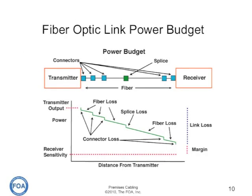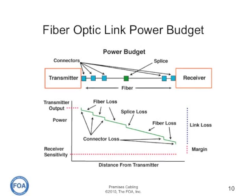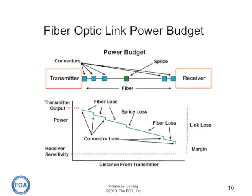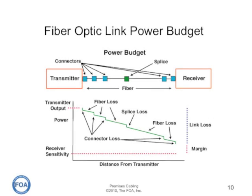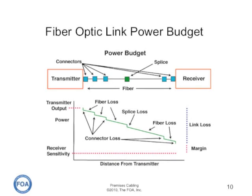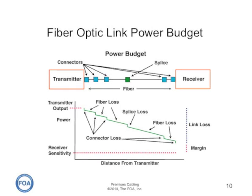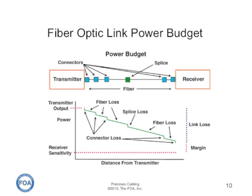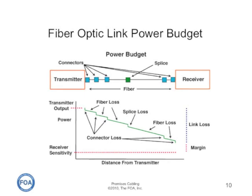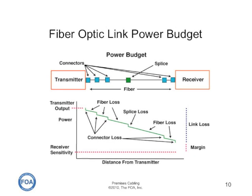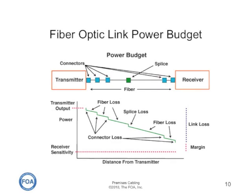To ensure a fiber optic link will work, we look at the link power budget. The link power budget considers the output power of the transmitter and the input power required for the receiver to get a specified dB loss for power that can be lost in the link. We then analyze the optical fiber in between for the length of optical fiber and its attenuation coefficient, and the loss of all connectors and splices. We sum that up to get the total expected loss from the cable plant, and ensure that it matches the dB loss budget of the transmitter and receiver.